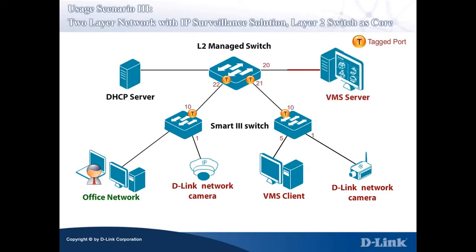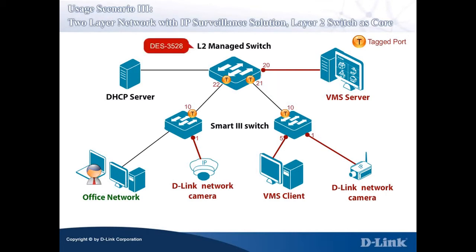The VMS server is connected to the Layer 2 Managed Switch, while D-Link network cameras and VMS clients are connected to Smart 3 Switches. In order to have Video Traffic Priority set to High, we have to change Port 28's 802.1p Default Priority Settings from the default value of 0 to 5. Here, we use the DES3528 as an example.